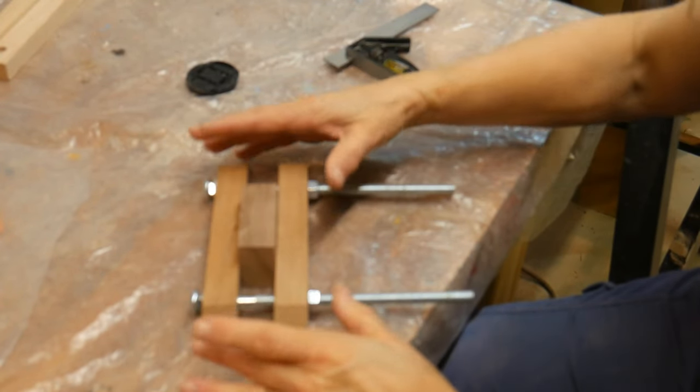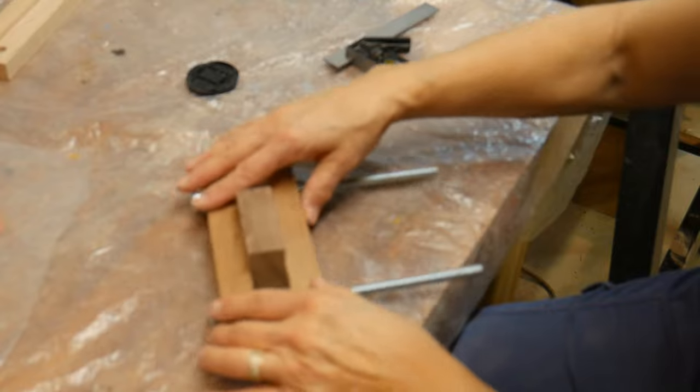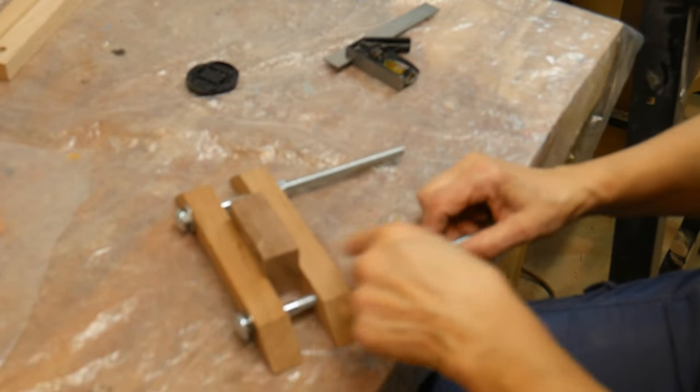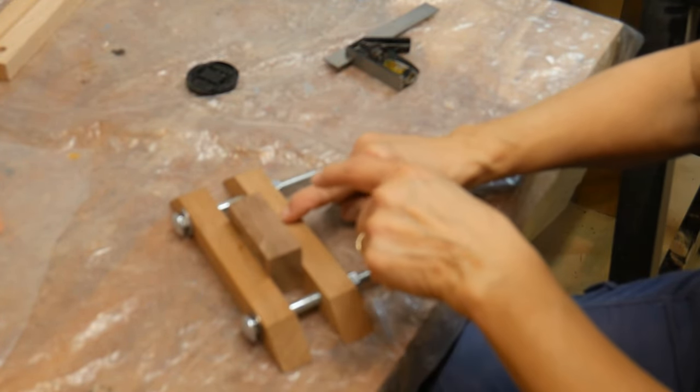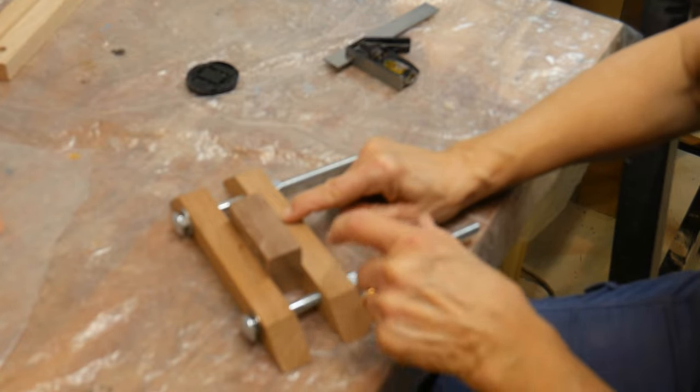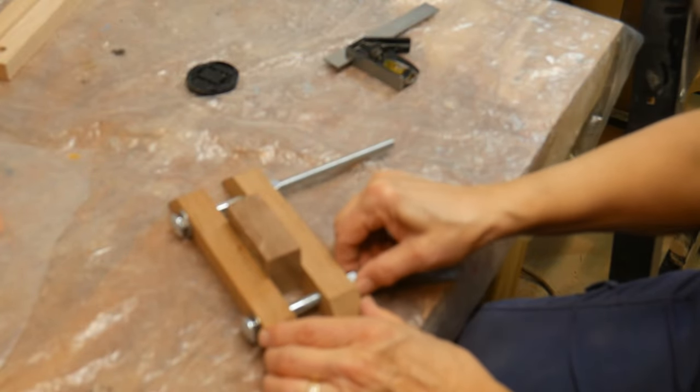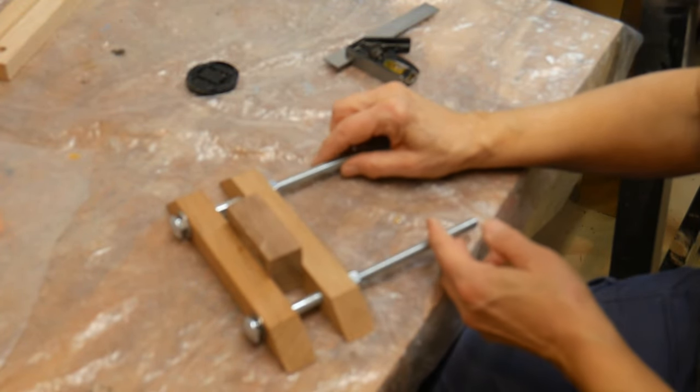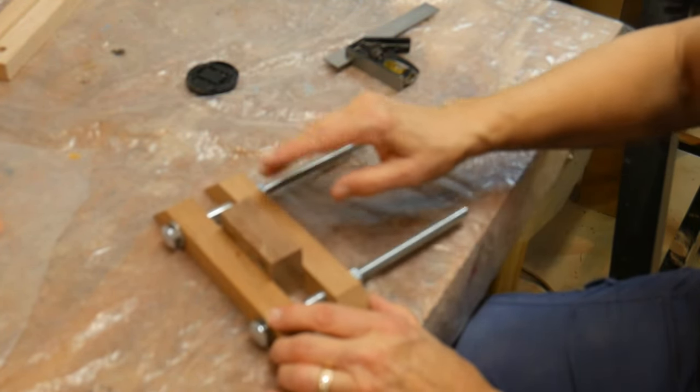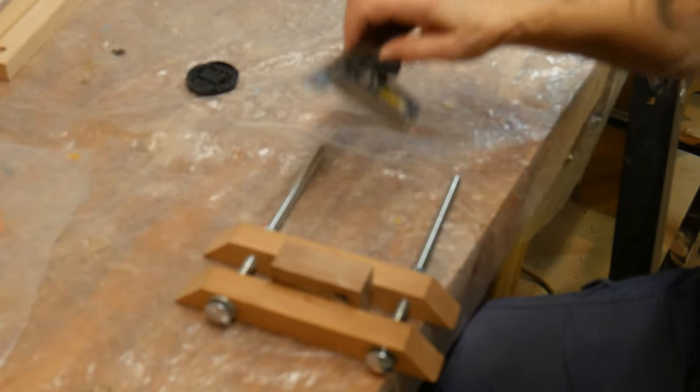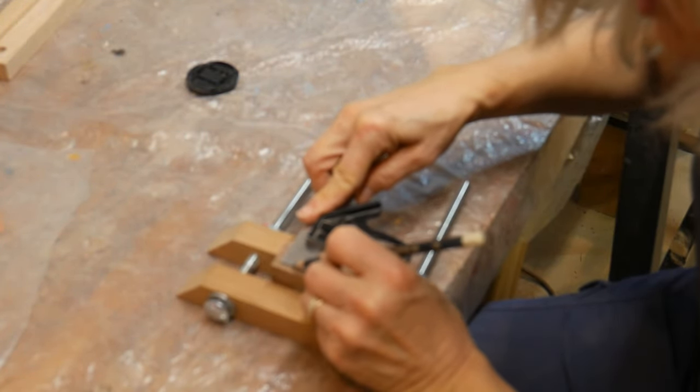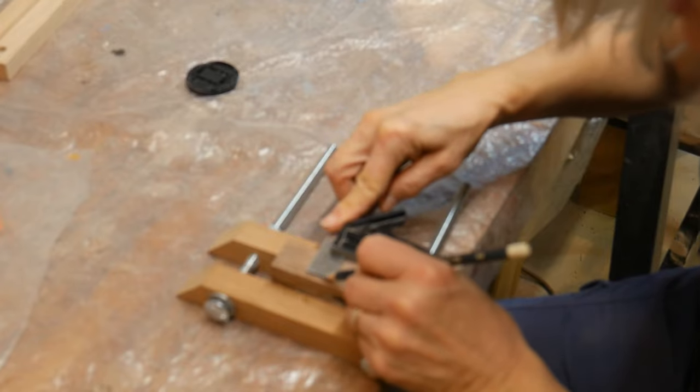I've devised this very simple clamping system to use in my scroll saw. It's just nuts and bolts with washers, 1 inch by 3 quarter inch hardwoods. I drilled the holes evenly on both sides and I have these bolts are huge but this is what I have so this is what I'm using and now I'm just going to be measuring an eighth of an inch to make my first cut.